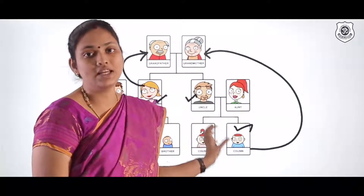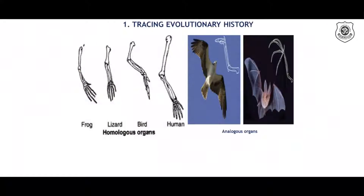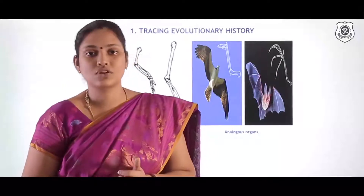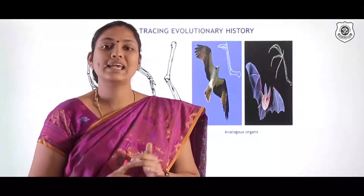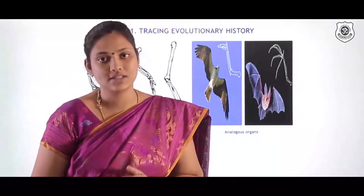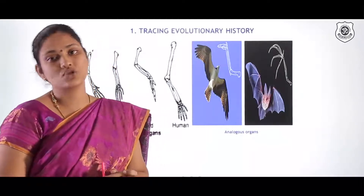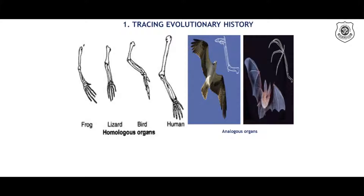How could the pattern of divergence in evolution among organisms be traced? That could be done in two ways: first, by looking into structural similarities or differences, and second, by looking at fossils. The first approach is tracing evolutionary history based on structure. The first image shows homologous organs — organs which have similar structure but different functions.